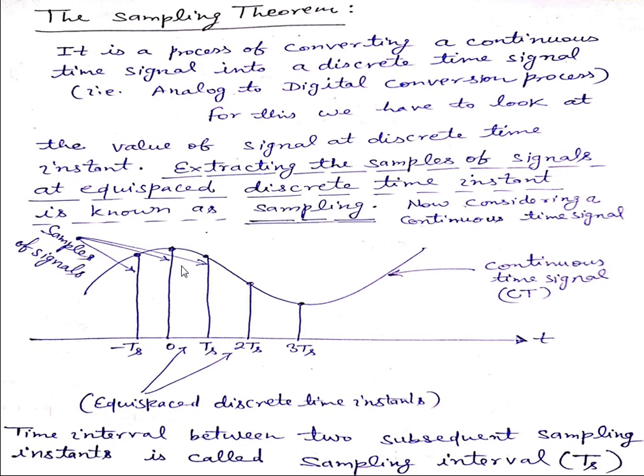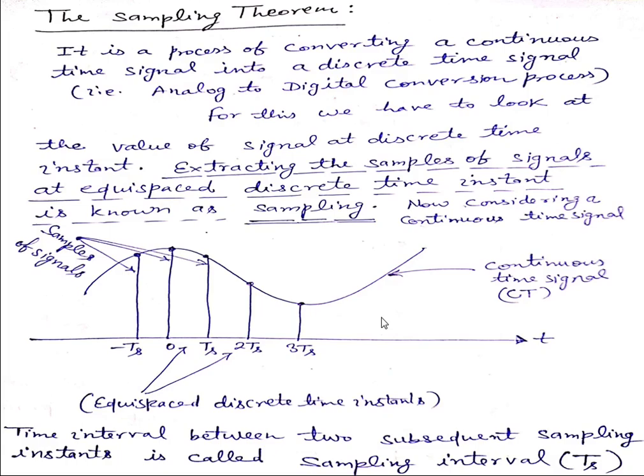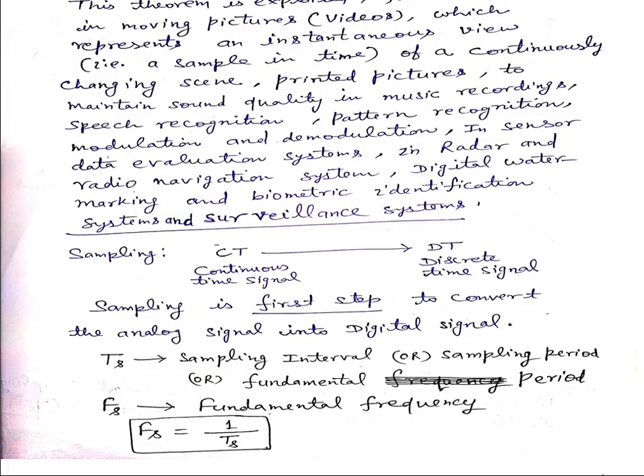So these are the samples at minus Ts, at 0, at Ts, at 2 Ts, at 3 Ts. These are the time instants, equispaced discrete time instants, and these are different samples. So time interval between two subsequent samples is called the sampling interval, that is the sampling period, and that is the fundamental period.